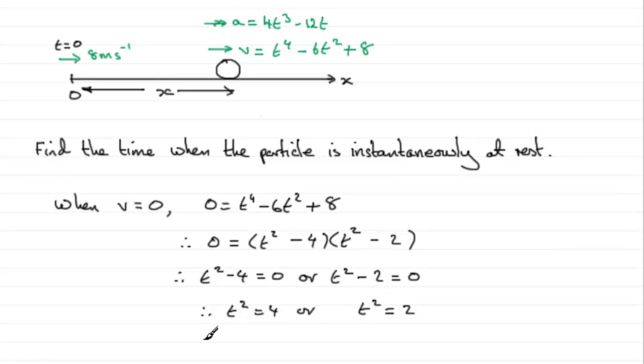Normally when you take the square root of some value, it would be plus or minus, but because t has obviously got to be greater than or equal to 0, then if we take the square root of these, we've got t equals 2, or in this case, t equals root 2. So that's when the particle comes to instantaneous rest.